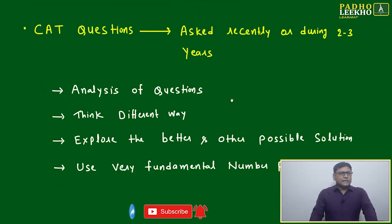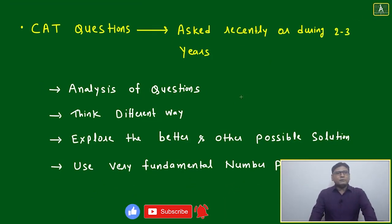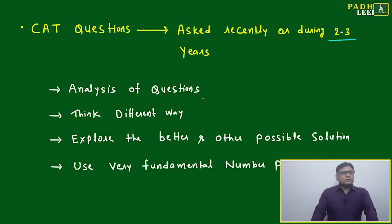Today's target is we'll discuss a few questions from CAT papers from the last two to three years. Afterwards, we'll do the analysis of questions. It will be eye-opening if you read carefully - many ways are there where you will be able to save time, and many times without investing much time and effort, you will be able to mark the correct answer with 100% confidence. Think in a different way - I will show you another possible solution using very fundamental number patterns.